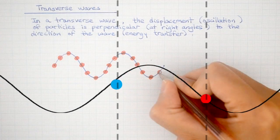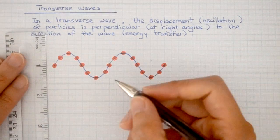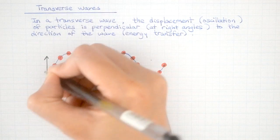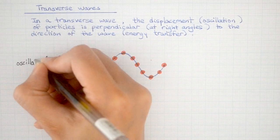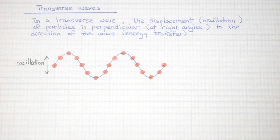So even though the energy is being transferred to the right in the same direction that the wave pattern travels, the particles do not move horizontally at all. They simply oscillate vertically about the equilibrium position.